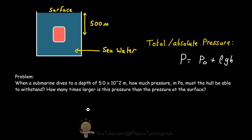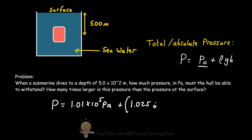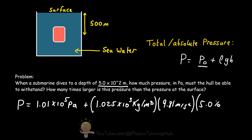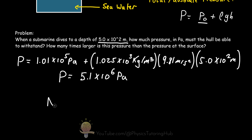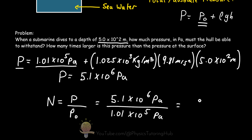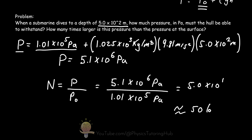The total absolute pressure at 500 meters equals atmospheric pressure plus the density of water — 1.025 times 10 to the 3 kilograms per meter cubed — multiplied by the acceleration due to gravity, multiplied by the depth of 500 meters. We get a final pressure of 5.1 million pascals. Dividing this by atmospheric pressure, the pressure at depth is 50 times that of atmospheric pressure at the surface.